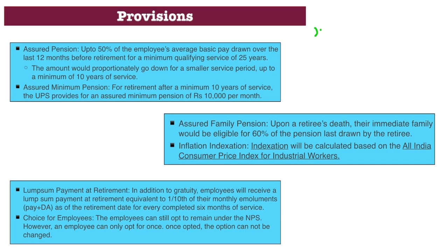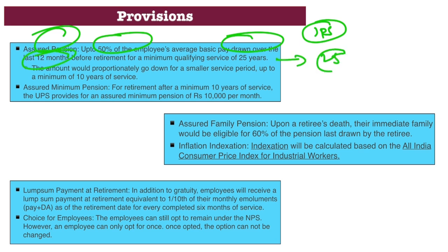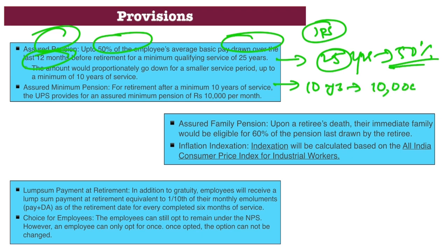Discussing the important provisions of UPS: there is an assured pension of 50% of the employee's average basic pay over the last 12 months, with a minimum of 25 years of service. If the employee has a minimum of 10 years of service, they will receive a minimum pension of Rs. 10,000.